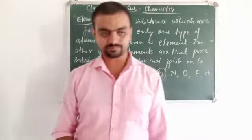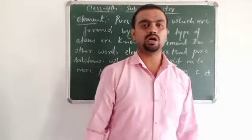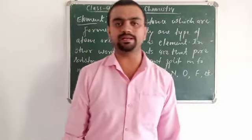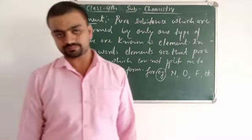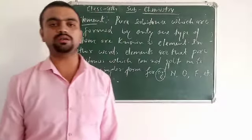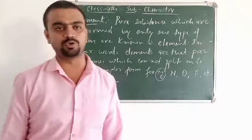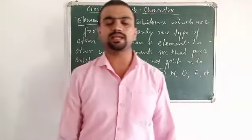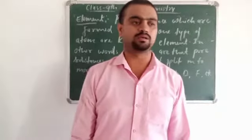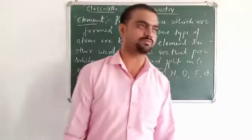For non-metals, elements which do not possess characteristic features like malleability, ductility, luster, and also do not conduct heat and electricity are considered as non-metals. And elements which possess both characteristics — like metals as well as non-metals — are considered as metalloids, like silicon, boron, germanium, etc.